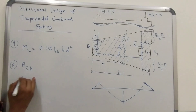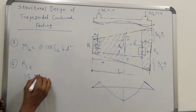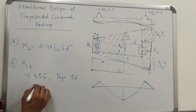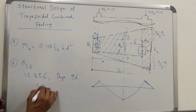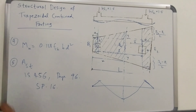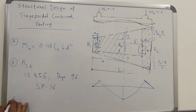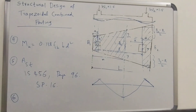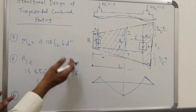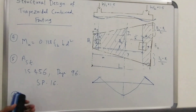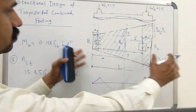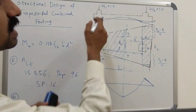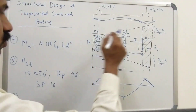Your AST can be calculated from IS 456, page 96, or you can directly refer to the SP 16 table. After calculation of the reinforcement required, you decide which diameter bar to use, and based on the length you can decide upon the spacing of bars to be provided.